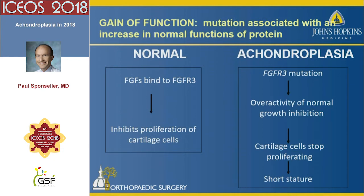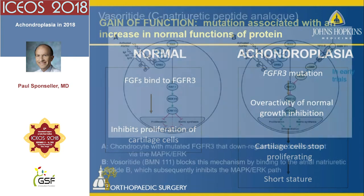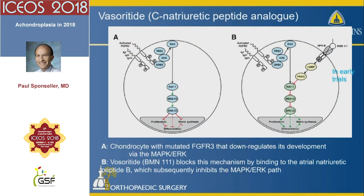This mutation causes a gain of function of the normal function of FGFR3, which inhibits proliferation of cartilage cells. In the presence of the mutation, you have overactivity of this inhibition, and the cartilage cells stop proliferating, leading to short stature, shortness of the pedicles, stenosis of the spinal canal, and some undergrowth of the thoracolumbar junction.